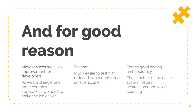Microservices, if done correctly — and especially looking at it in the way we are with event sourcing and CQRS — can actually enforce good coding practices on an architectural level. So instead of trying to get developers to build good apps on the object and module level as you would in a monolith, you're taking it one level out and forcing good coding practices onto them through the architecture itself.